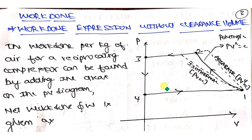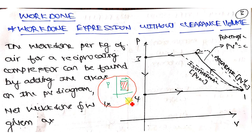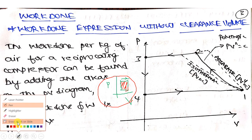Work done in this cycle can be calculated as follows: if there is a process shown on a PV diagram, you need to calculate the work done for all four processes from one point to another. In order to calculate the work done of such processes, you need to calculate the area enclosed within the PV diagram. The area enclosed within the cycle gives you the work done.